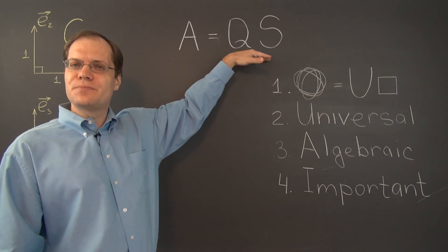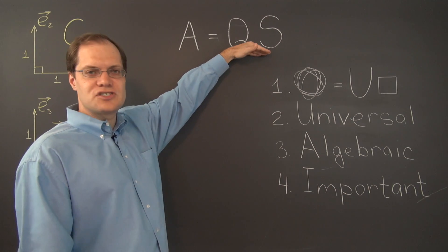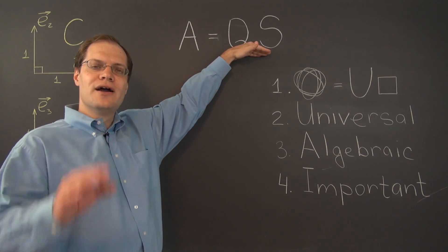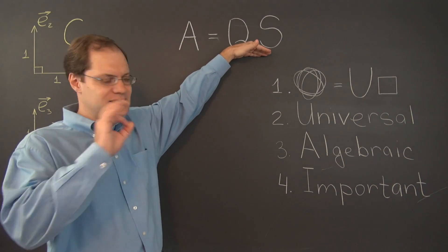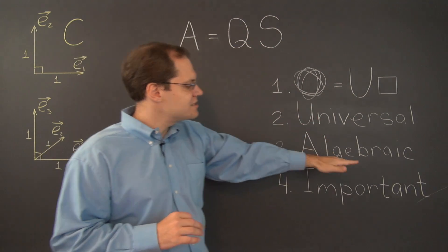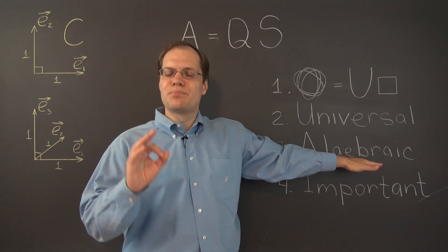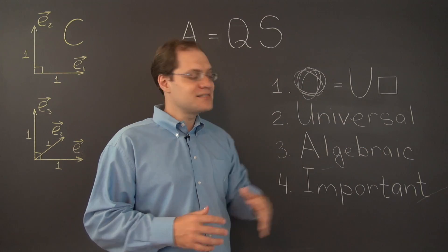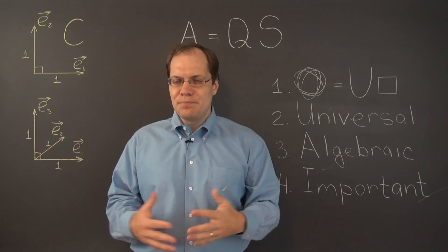And it's just a remarkable example of algebra and geometry working together. Now, yes, it's an algebraic statement in terms of matrix products, but it's also a purely geometric statement which has a completely algebraic proof. So,